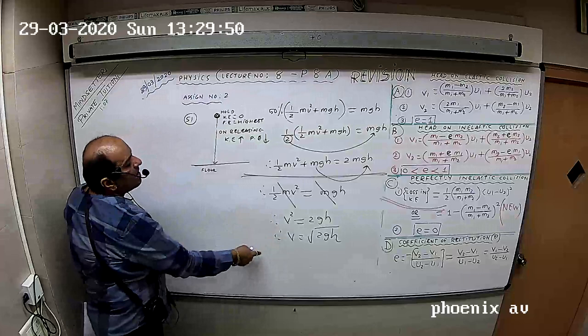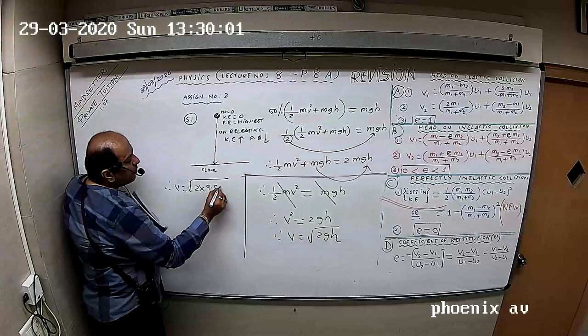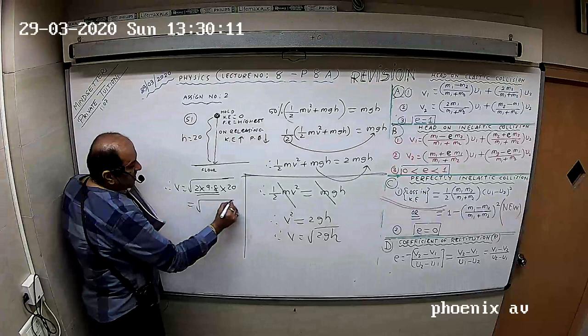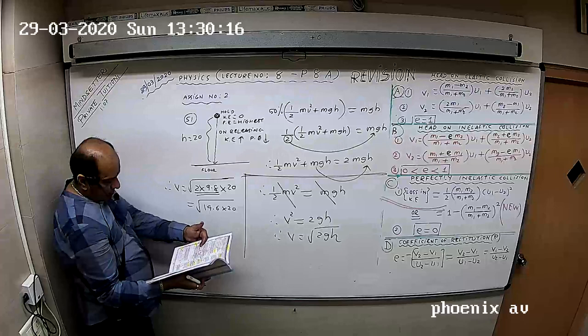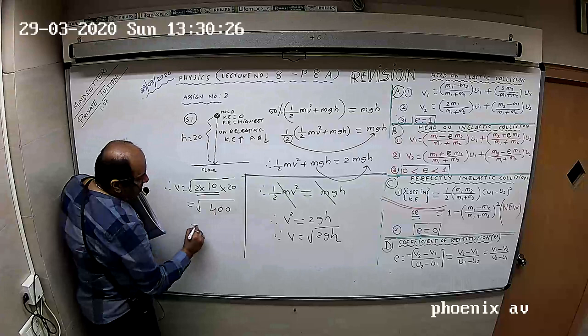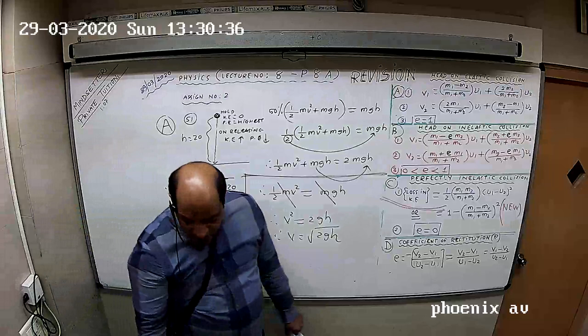So now what is V? It is root of 2gH. g is 9.8, but I see round figures so I will take it as 10. So this becomes 400, square root gives answer 20. So 51st question answer is D.